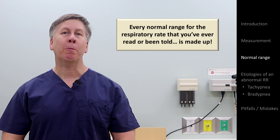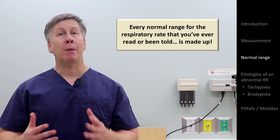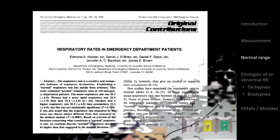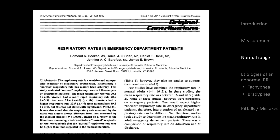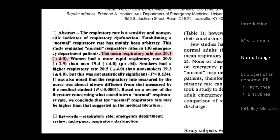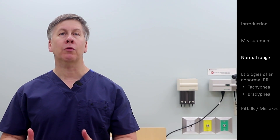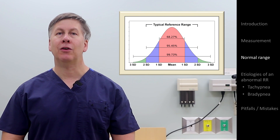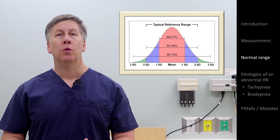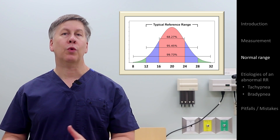I'm not joking. There is virtually no primary data on the normal respiratory rates of healthy adults. The primary data that we do have includes a study of 110 patients in an emergency room for non-cardiopulmonary complaints who had a mean respiratory rate of 20 with a standard deviation of 4. Remember that the conventional definition of a normal range for normally distributed data is two standard deviations, so this particular study would suggest a normal range among ED patients of around 12 to 28.